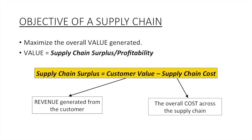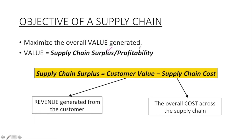So what is the objective of a supply chain? The objective of a supply chain is to maximize the overall value, defined as supply chain surplus or profitability. The formula for supply chain surplus is customer value minus supply chain cost. In layman terms, it is total revenue that a company generates from the customers minus the total overall cost.